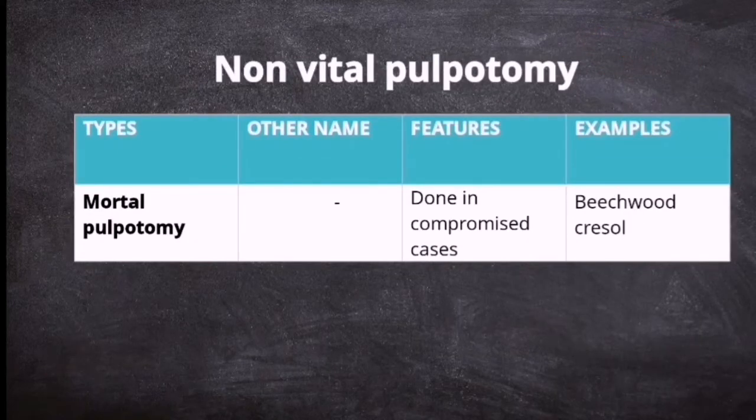Now moving on to non-vital pulpotomy. It is not very common. There is only one type and that is mortal pulpotomy. The feature is that it is done in compromised cases. And the example is beechwood cresol.